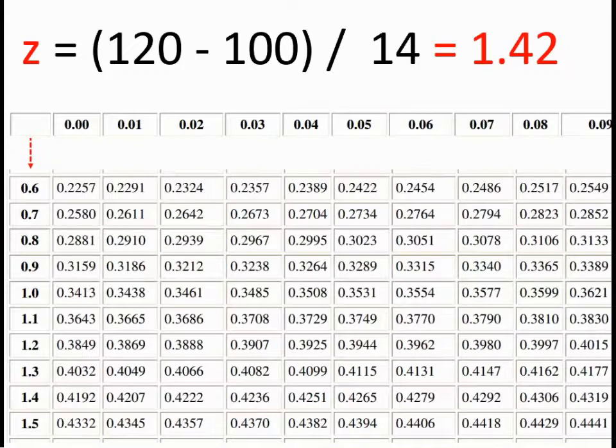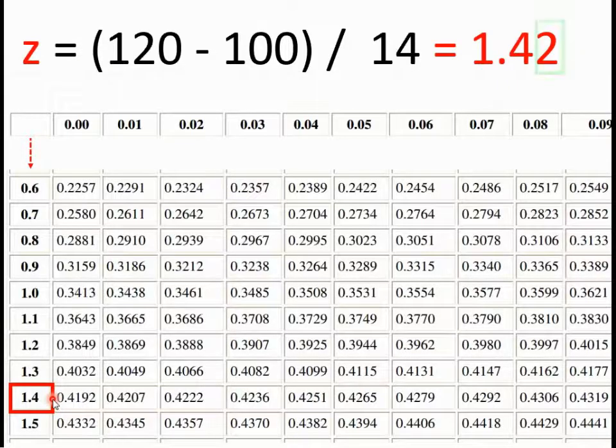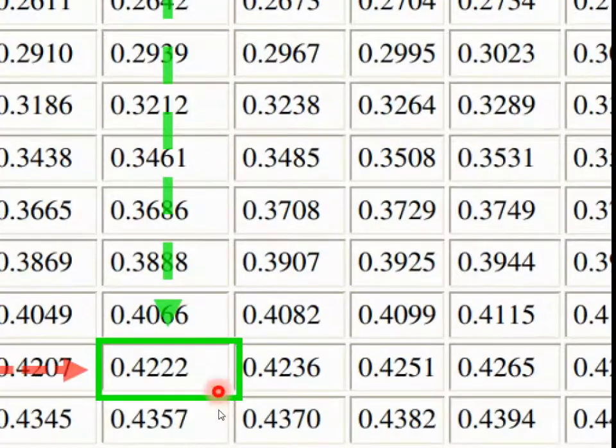We scroll down until we find a number in that column that matches our z-score; in this case, that corresponds to 1.4. For the second decimal of our z-score, we look at the top row, and where these two values intersect, we'll find the information we need stated in probabilities.